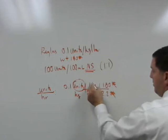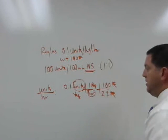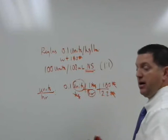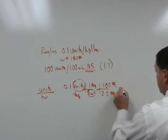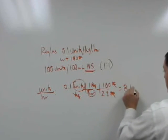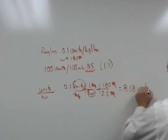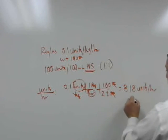Now, I'm able to cancel out, and all that I'm left with are the units I'm looking for, and then now my math. At this point, we have 8.18 units per hour infusion.